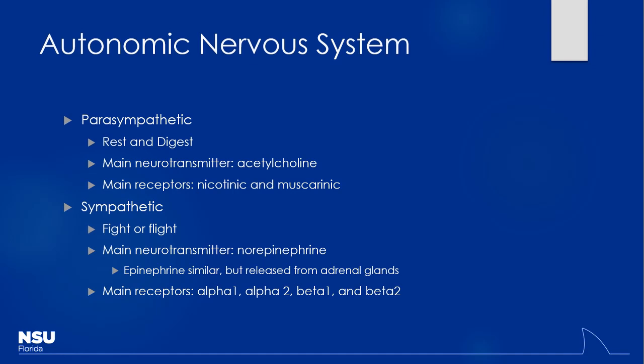The main neurotransmitter for the parasympathetic is acetylcholine, which acts on muscarinic receptors. Anyone know where that muscarinic name comes from? It's actually from a mushroom called the Amanita muscaria — the red cap mushroom with the white specks on it, kind of like Mario. There's a compound in there called muscarin that interacts with the parasympathetic nervous system and directly stimulates it. When Mario eats one of those mushrooms, he gets big — it's been used for hallucinogenic properties. So he's really just tripping out the whole time.